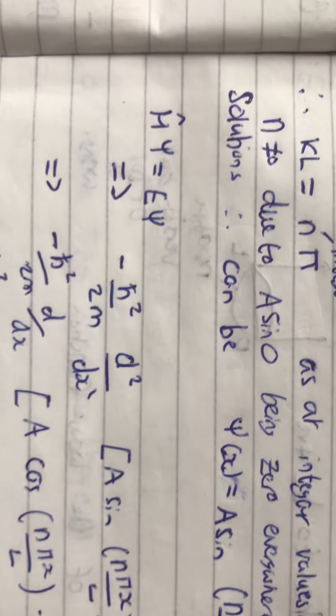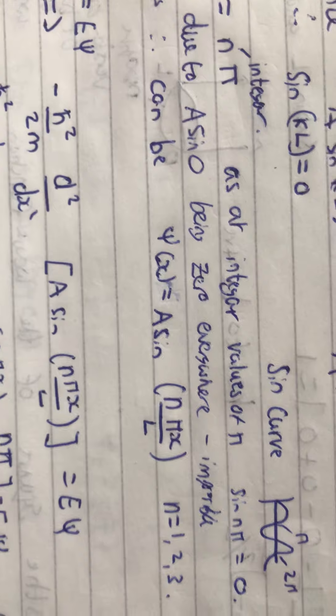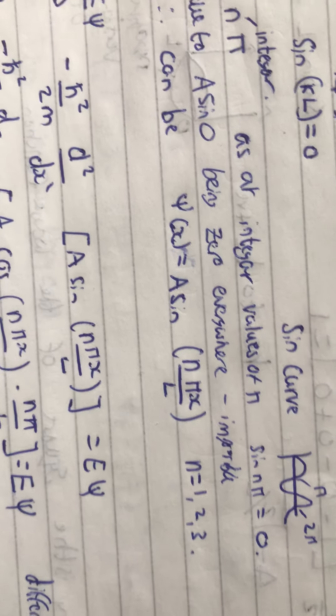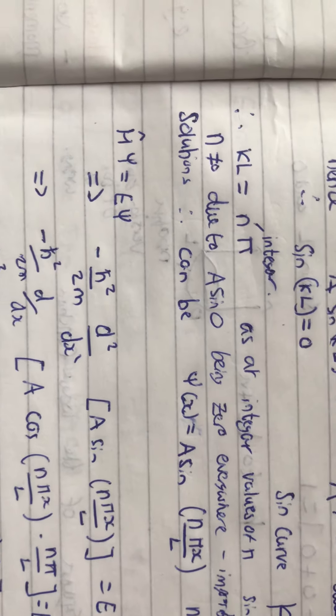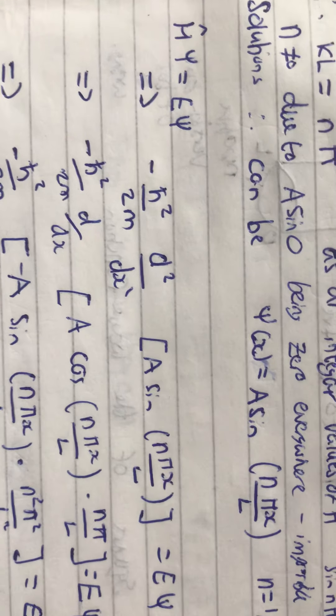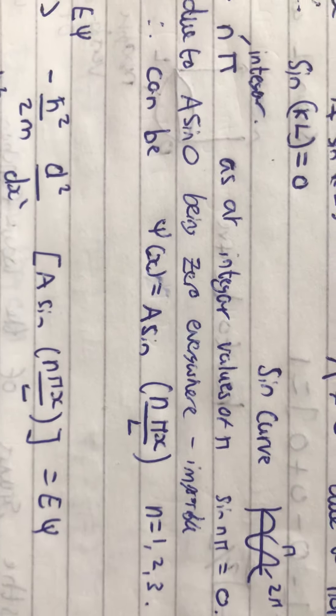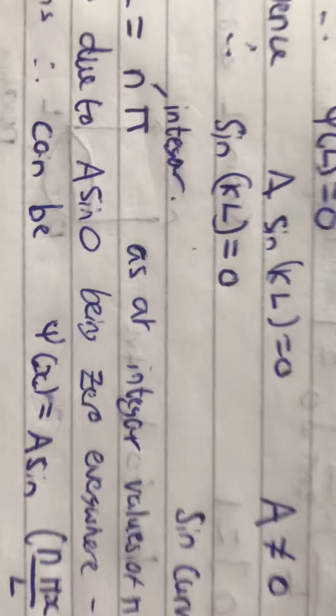So, if we take this Schrödinger equation, which is essentially what we had right at the start up here. Just a little bit different. I don't know what I'm saying. Apologies.